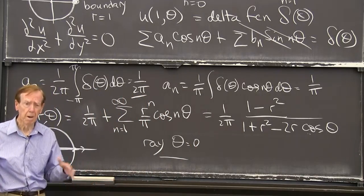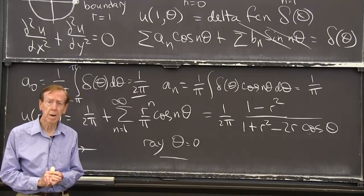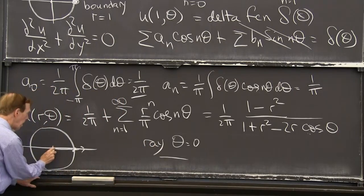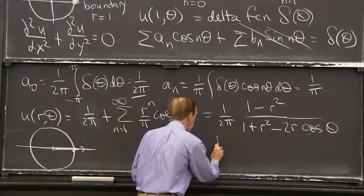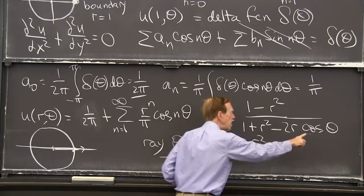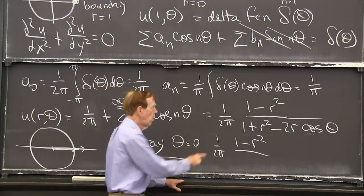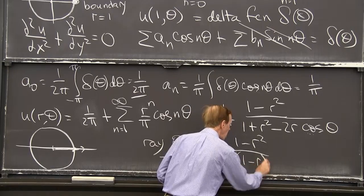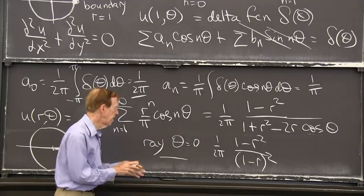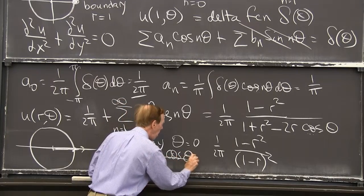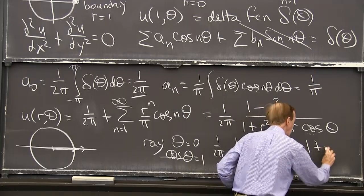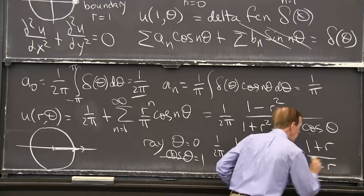So let me just put on the ray theta equals 0. This is sort of what you should do. We have a formula for all r and theta. But let's look at some particular points to see what's happening. So along that ray where theta is 0, I have 1 over 2π, 1 minus r squared over 1 plus r squared minus 2r, because cos theta is 1. And 1 plus r squared minus 2r is 1 minus r squared. Because cos theta is 1 on this ray. Theta is 0, cos theta is 1. And now 1 minus r will factor out of this. And I think we get 1 plus r, and we still have a 1 minus r down below. I like that.